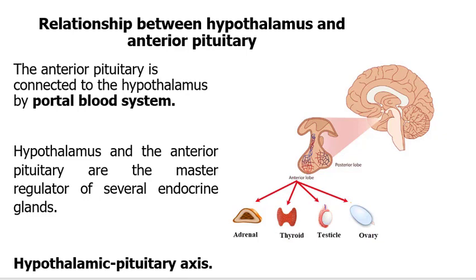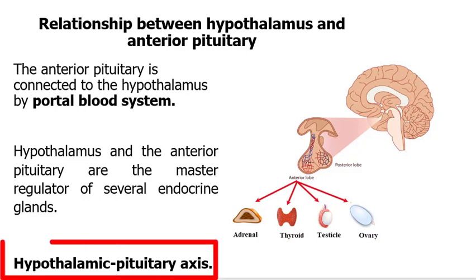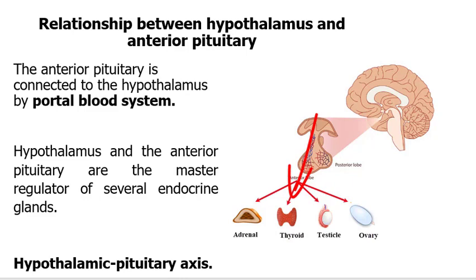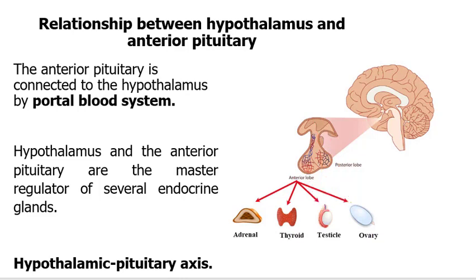And thus, these are termed accordingly the hypothalamic-pituitary axis — for example, the hypothalamic-pituitary-adrenal axis, the hypothalamic-pituitary-thyroid axis, and the hypothalamic-pituitary-gonadal axis. So, for our discussion on the regulation of thyroid hormones, we have to refer to the hormones secreted by the hypothalamus as well as the anterior pituitary gland.